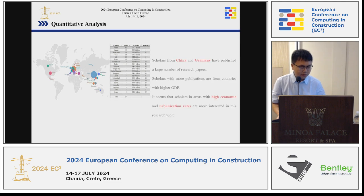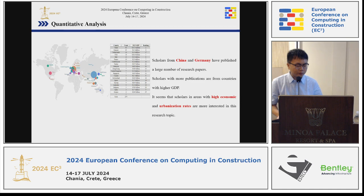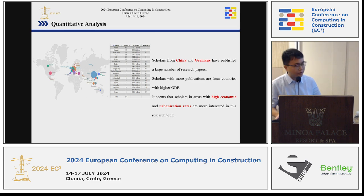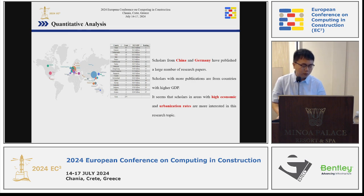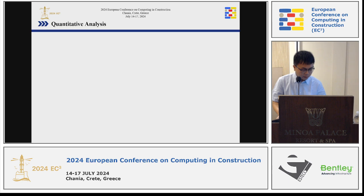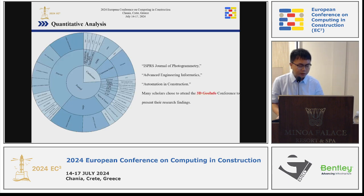I will show you the results. First, regarding countries, we found that scholars from China and Germany have published a large number of papers in this field. From the table, scholars with more publications come from countries with higher GDP — it seems that economic development and urbanization rates are key drivers of interest in this research topic. Regarding journals, the ISPRS Journal of Photogrammetry, Advanced Engineering Informatics, and Automation in Construction are favored by scholars.